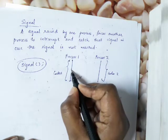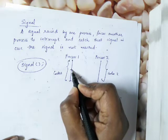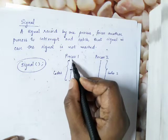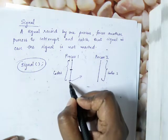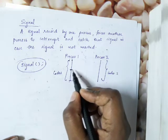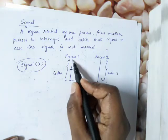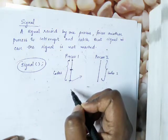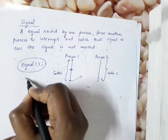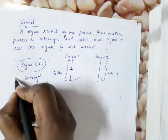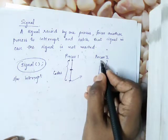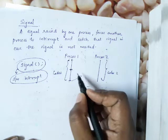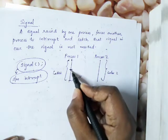Process 1 has a particular information and communicates with process 2. I have a normal execution of the process. What is the concept? Interrupt. The function is called a signal function. If you have a signal function, that signal function is provided to process 2 and that process 2 will be completed.